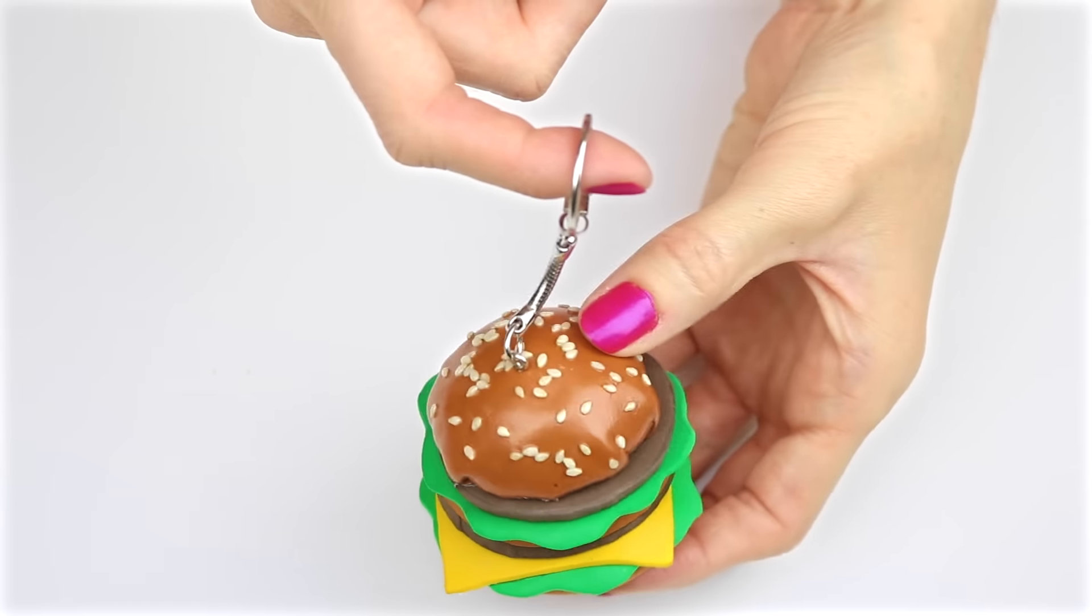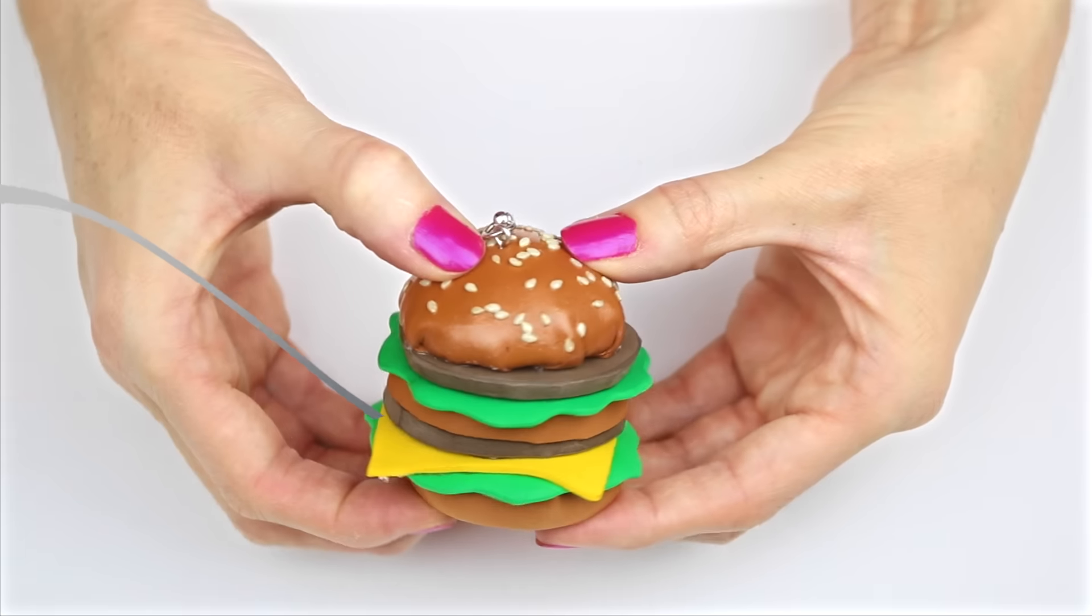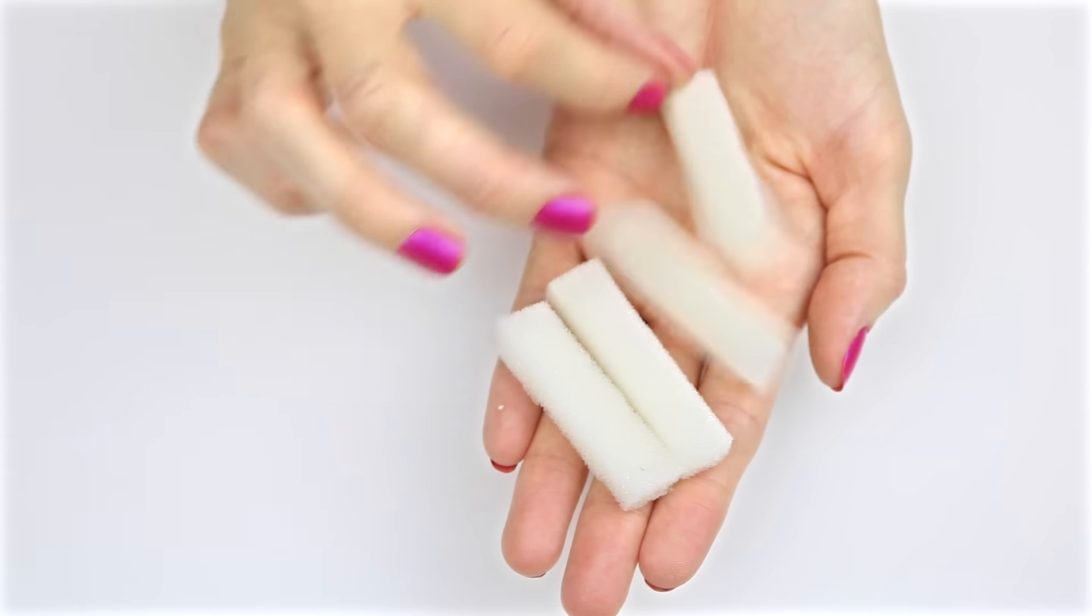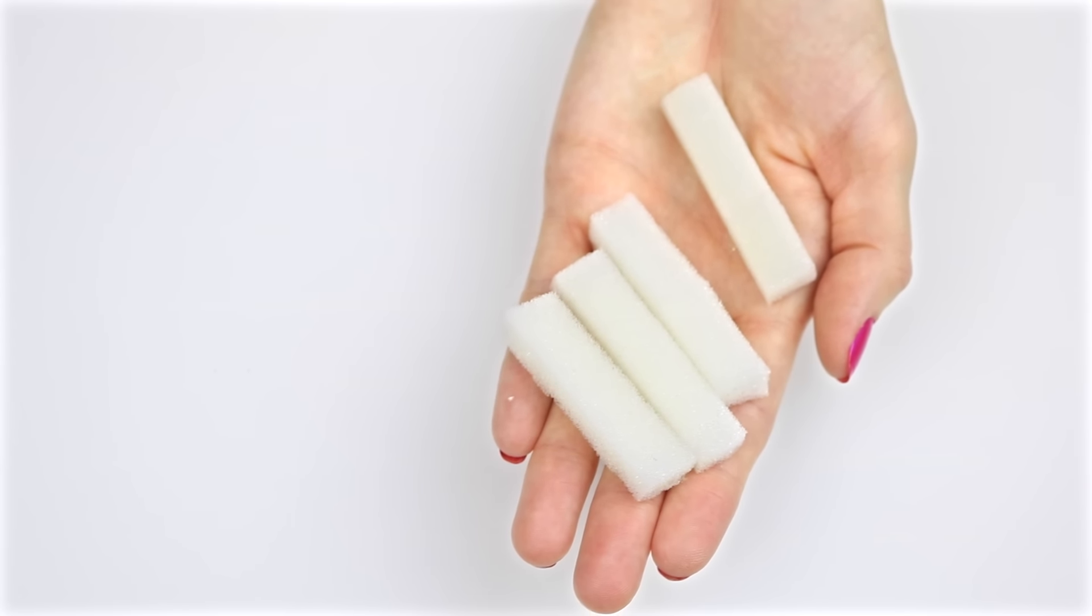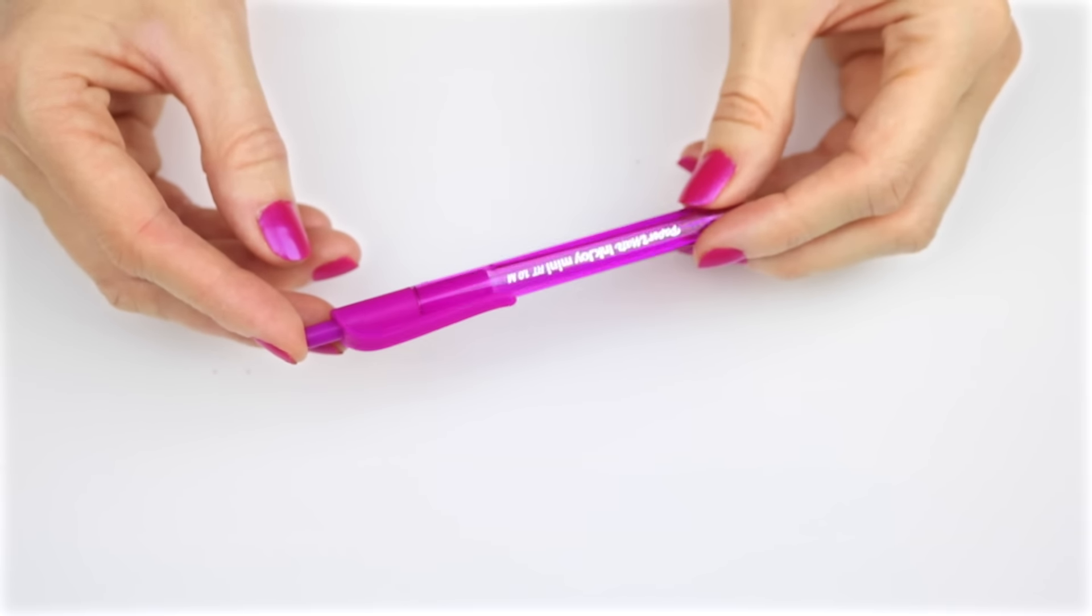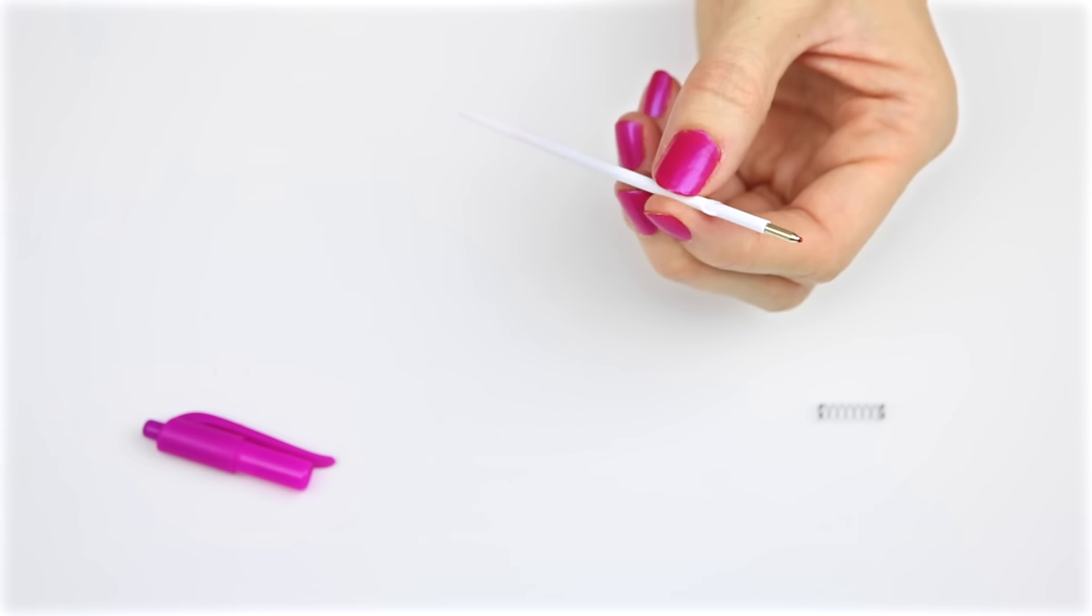The next DIY will be mini french fry pens and pencils. Using a piece of spongy foam, cut out four or five little pieces to resemble french fries. I'm going to use the ink from a mini pen. You can always use a regular size and cut it down.